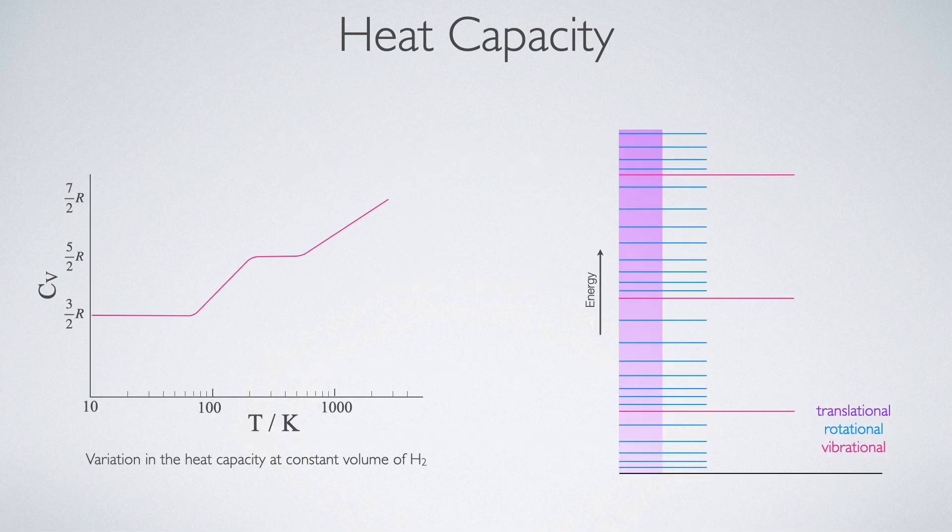So here I have a plot to show the variation of heat capacity at constant volume of molecular hydrogen. And we can see at very low temperatures, it's pretty much bang on this three halves R. And then I get to a certain temperature and it increases until it's about five halves R. And then it increases again. But we're now talking for this to be at temperatures much higher than room temperature. You can see that it's about a thousand Kelvin before I even start to see this ramp up to the seven halves R that equipartition theory would predict. Well, this is to do with the energy levels within the system.